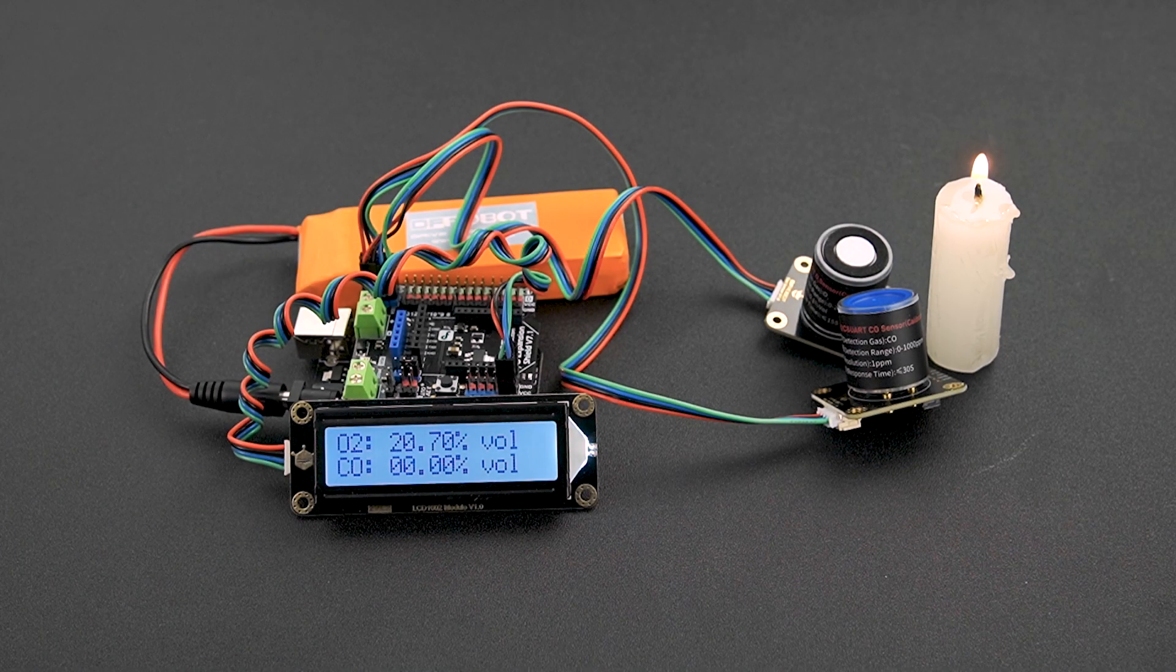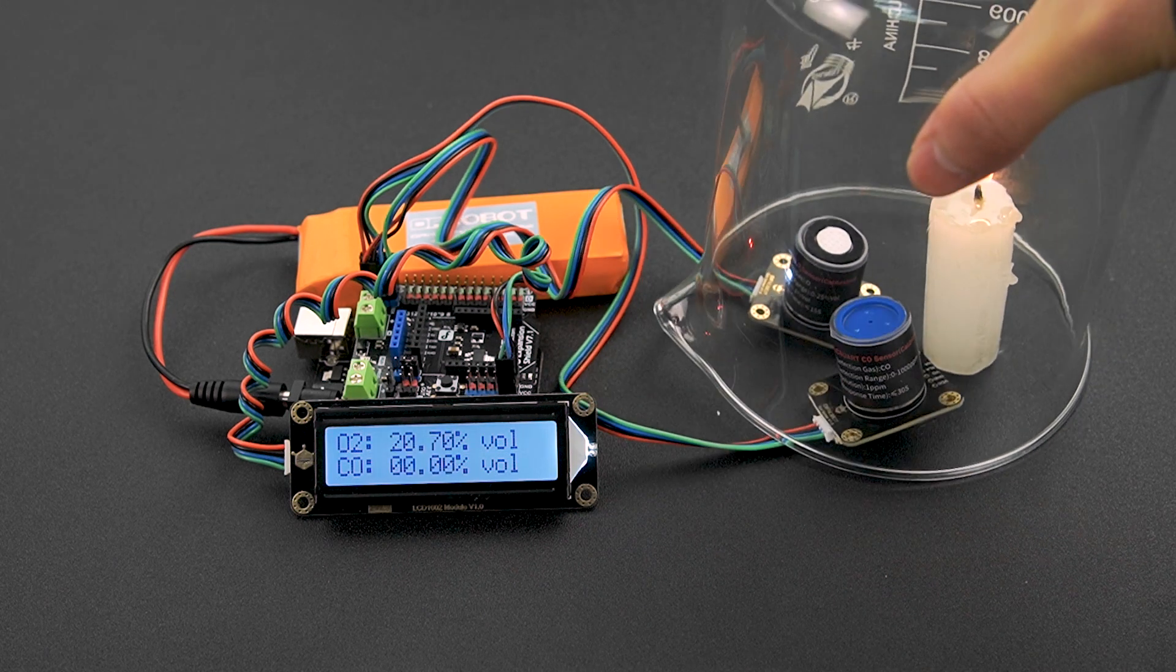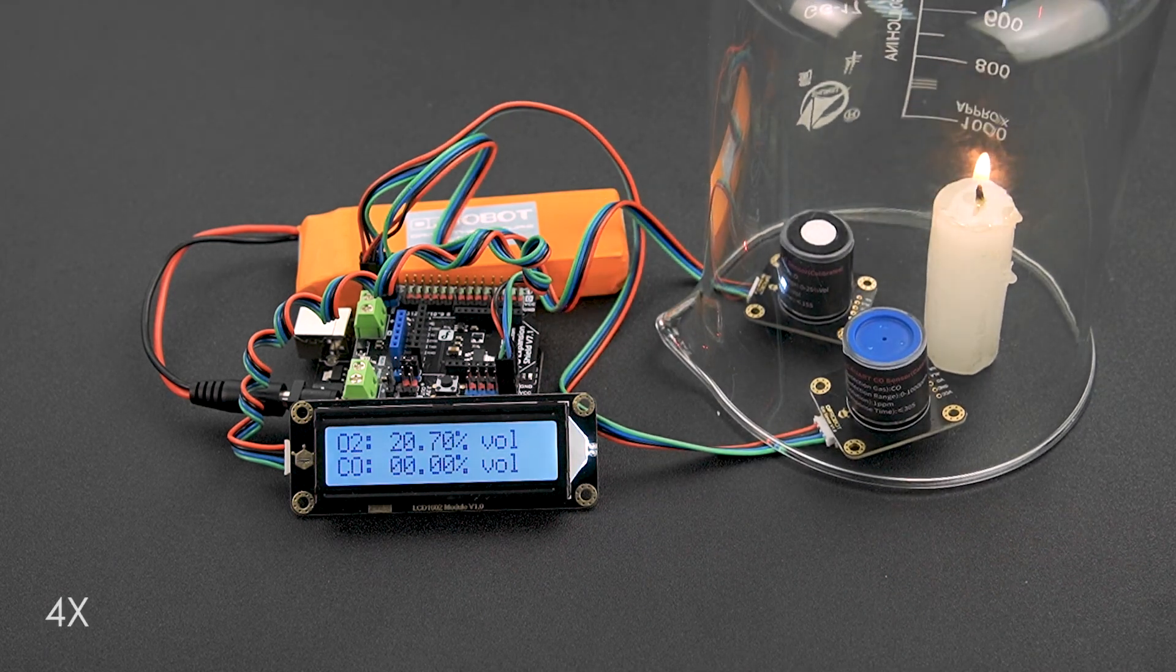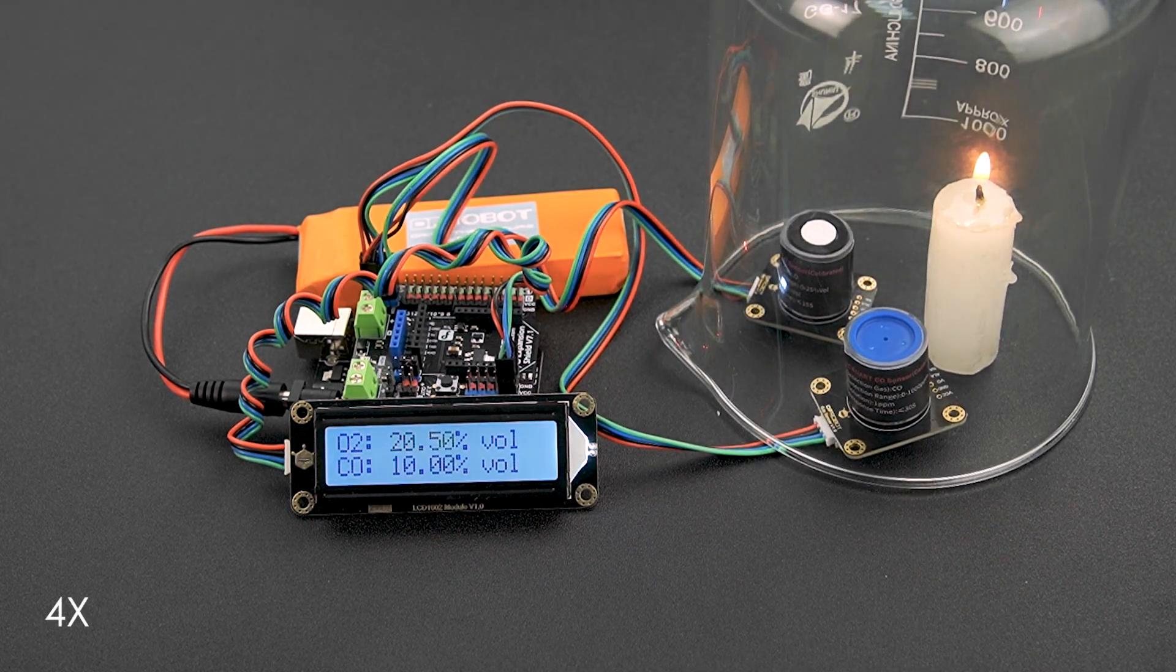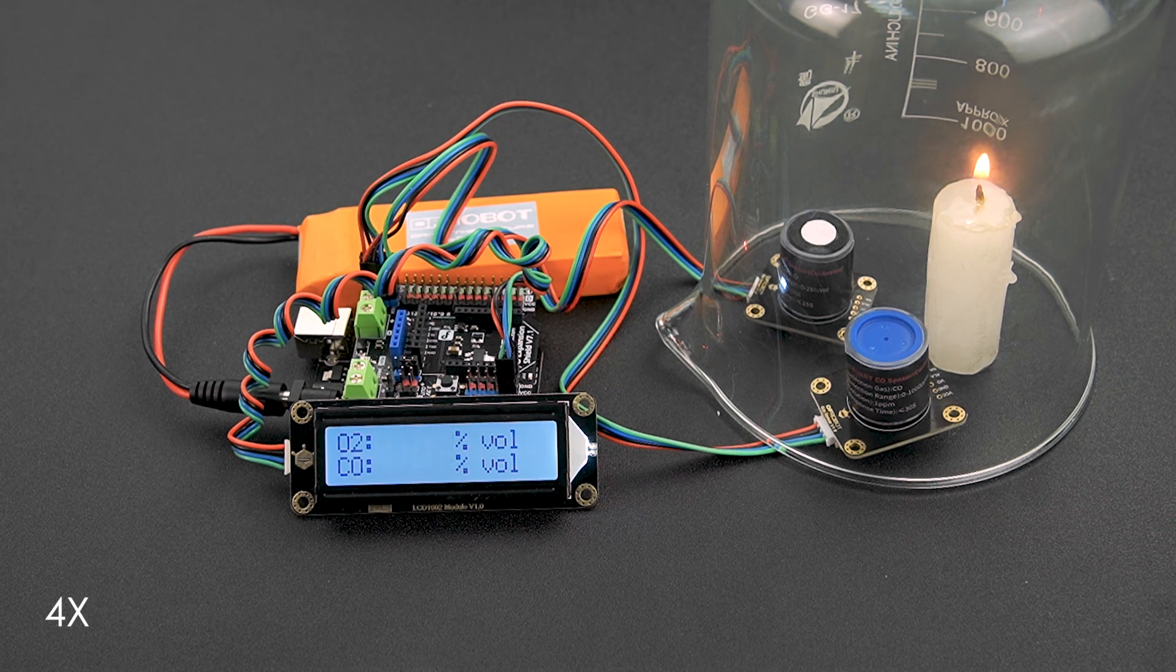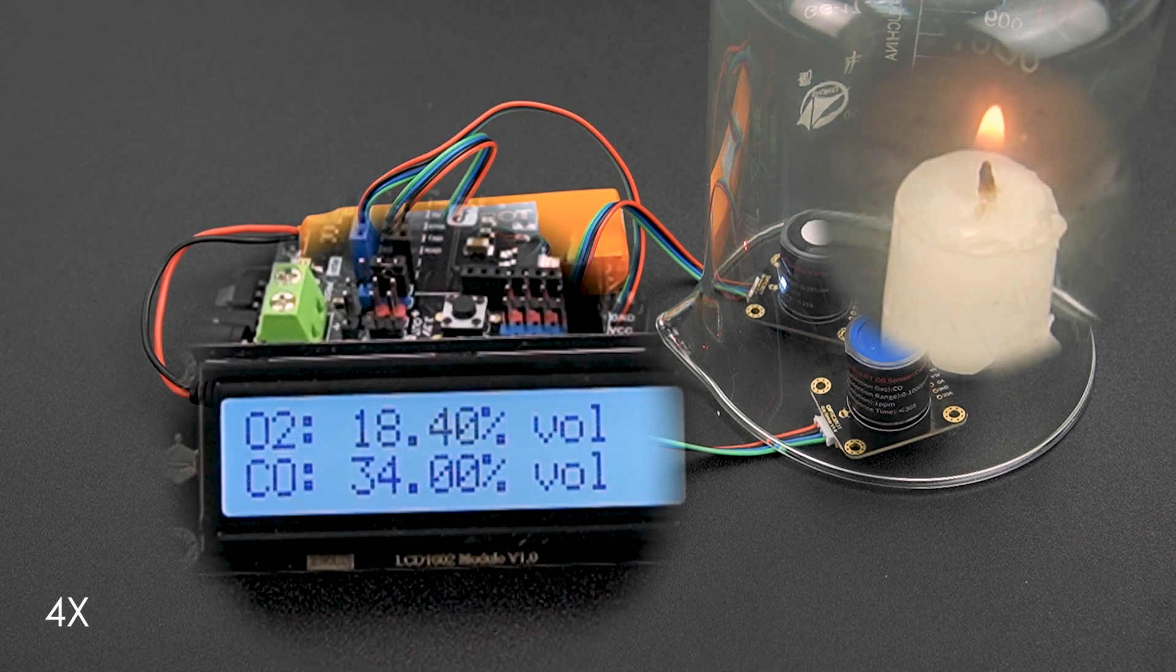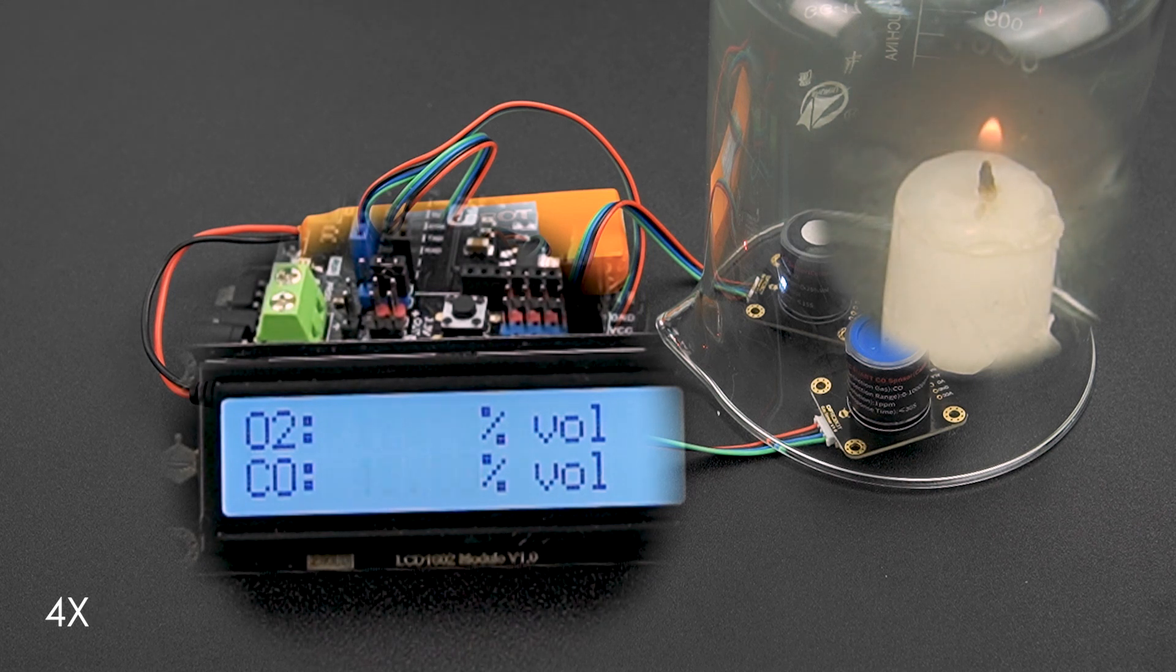We light the candle and put it along with the oxygen sensor into a container. We then see the oxygen content decrease on the screen. Besides that, the carbon monoxide in the container can also be detected, and we will talk about that in the future.